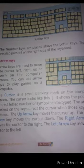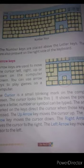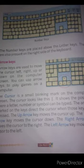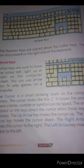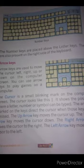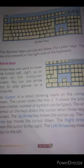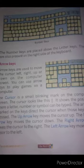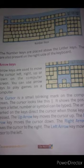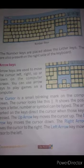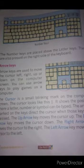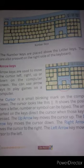Arrow keys are used to move the cursor left, right, up, or down on the computer screen. You can also use arrow keys to play games on a computer. The cursor is a small blinking mark on the computer screen.